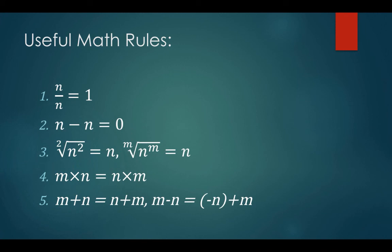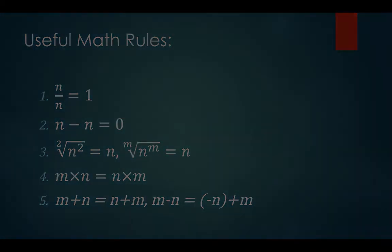And finally, m plus n equals n plus m, or m minus n equals minus n plus m, also known as the commutative rule. Now let's take a look at a few examples.